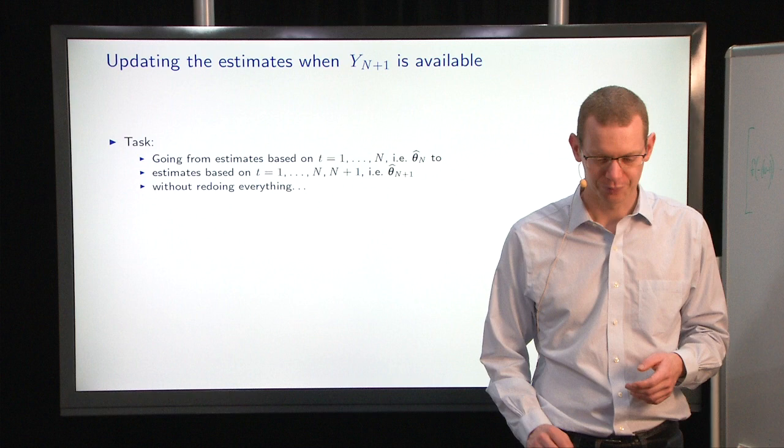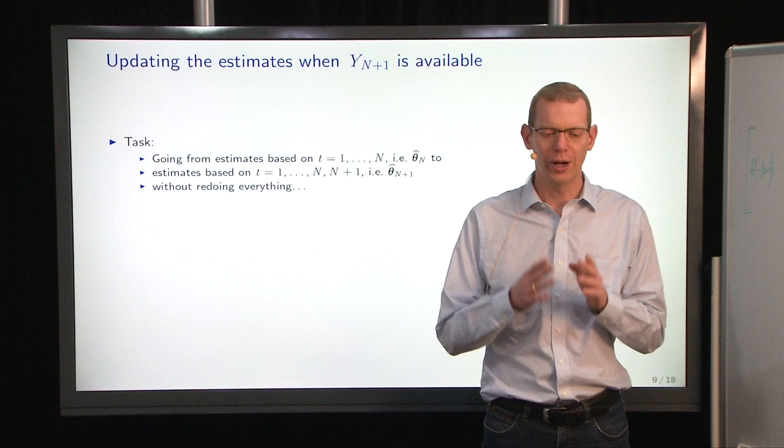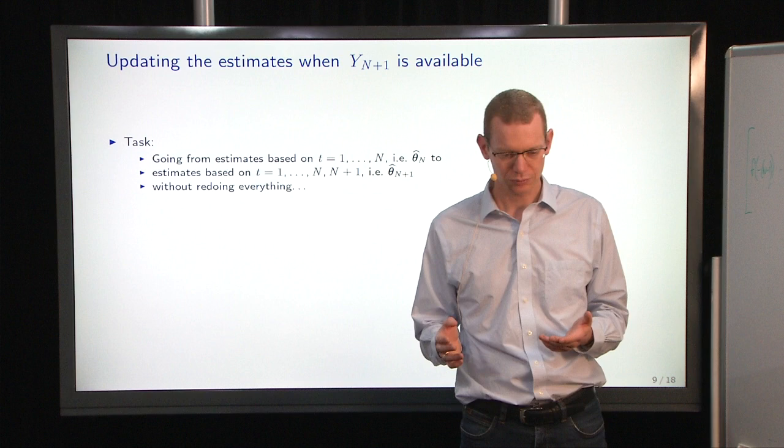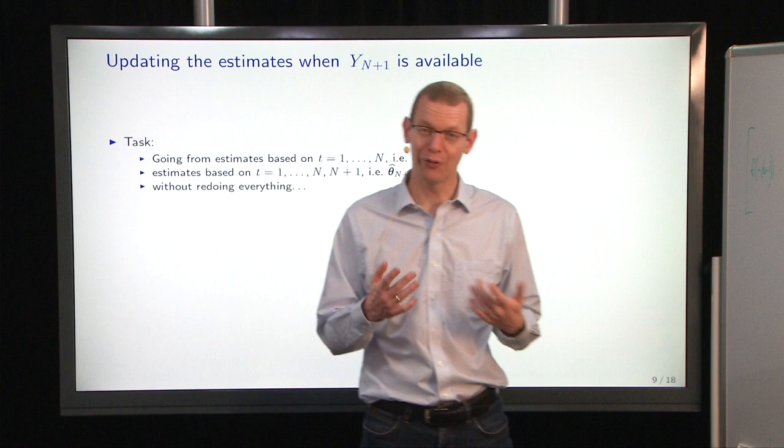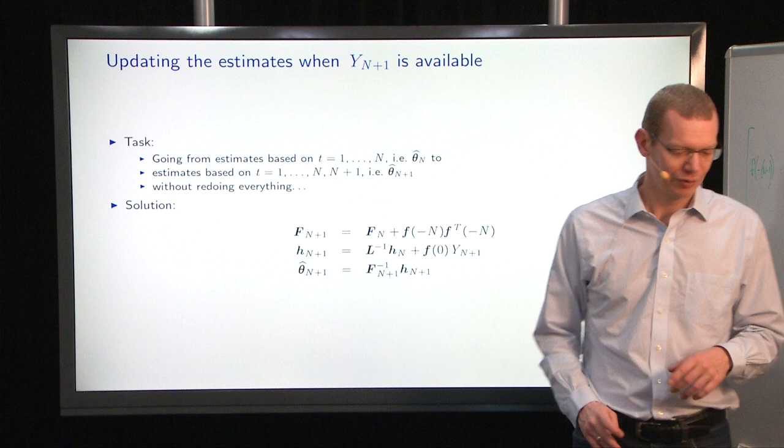Now, what I said is that we want to get to a point where, when we get a new observation, we don't have to redo everything. So based on what we know at a given point in time, we need to figure out how to get to the next point in time when we get a new observation, how to get a new estimate of theta in that case, without redoing everything.